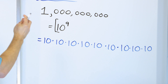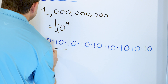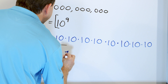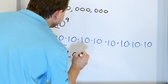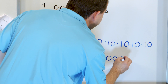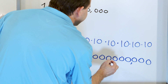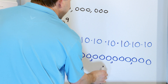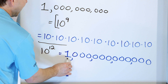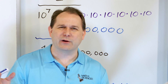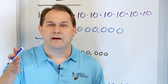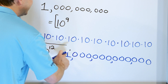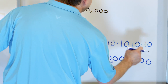Final problem: take ten to the power of twelve and write it as a full number. Ten raised to any power is just a one with that many zeros after it. So we count out twelve zeros: one, two, three, four, five, six, seven, eight, nine, ten, eleven, twelve. Put commas every three digits. If hundreds of thousands, hundreds of millions, hundreds of billions lead us here, we're talking about trillions. Ten to the power of twelve is one trillion.